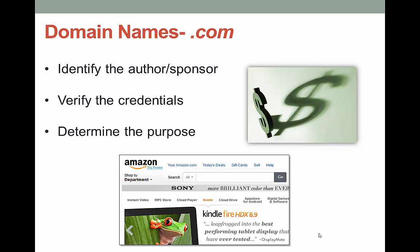A .com is probably what you see the most of, and these can be created by anyone — from a PhD researcher to a 13-year-old girl who wants to declare her undying love for One Direction. Usually you can tell the difference, but sometimes it can be hard to detect that the website is not a good source of information. .com sites are usually commercial in nature — they're trying to sell you a product or even an idea. When looking at a .com site, you want to identify the author or sponsor, verify the credentials, and examine the purpose. You've already had experience with this when using the CRAAP criteria.